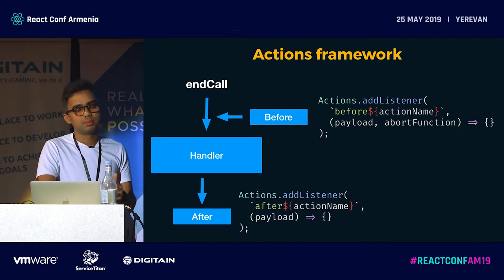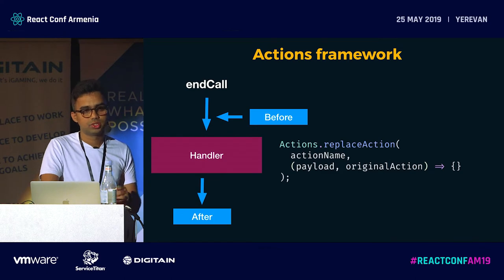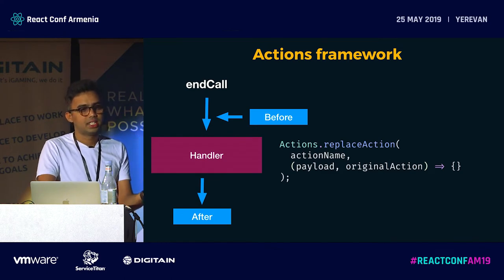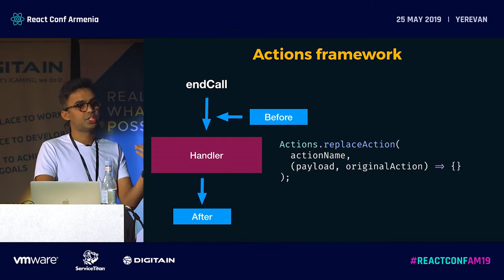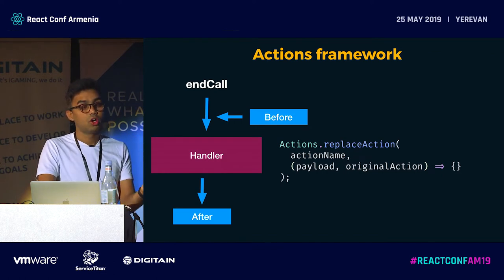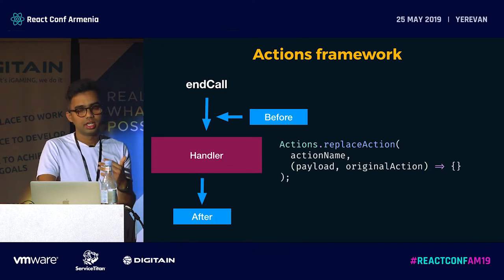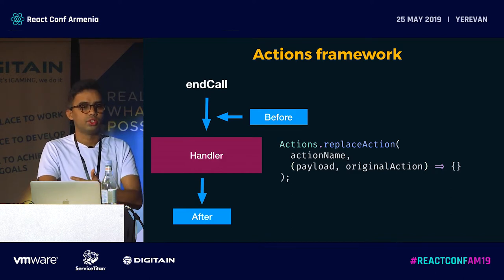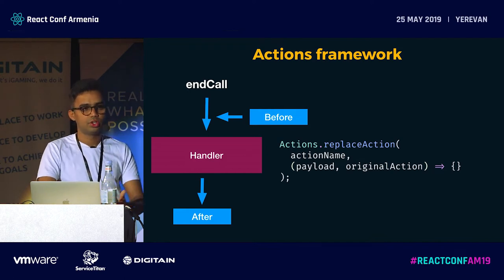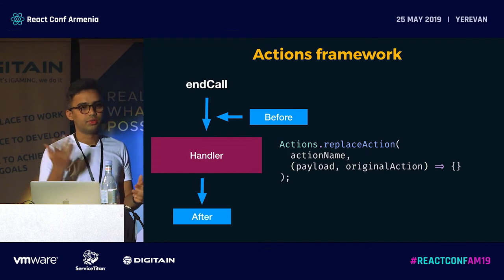Customers also wanted to replace the entire handler. We provide an API where you pass the action name, receive the payload that the actual handler would get, and also receive the original action. In that callback you can decide whether to execute your own handler or the original action — essentially combining the before-hook functionality as well.